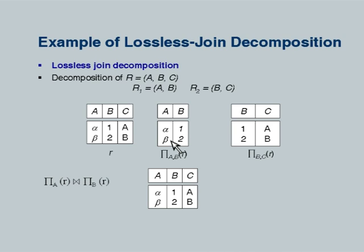In this case we could insist either that B functionally determines C — meaning if two tuples are the same on B they must be the same on C — or conversely that if two B values are the same, their A values must be the same. Either of those would be a sufficient condition, though not a necessary condition; there are other conditions that also guarantee lossless join.